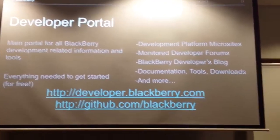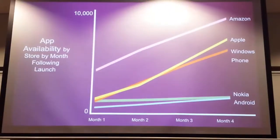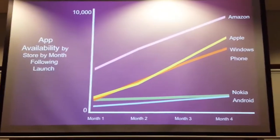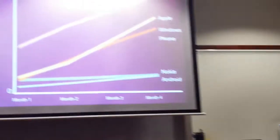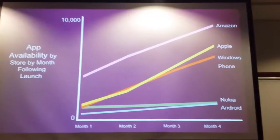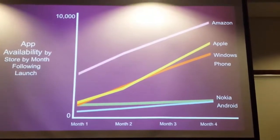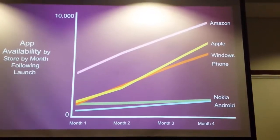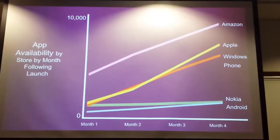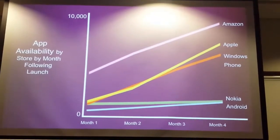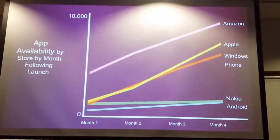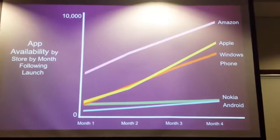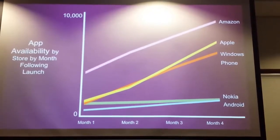Just to leave you with one last thing: this is a slide showing how other app stores in the market have launched and their growth curves. We have a BlackBerry dev alpha device here running our latest 10.2 operating system. If you can guess the number of applications that BlackBerry launched with and how that fits into this scale, you can walk away with it — the first person to tweet it to SidJax wins.